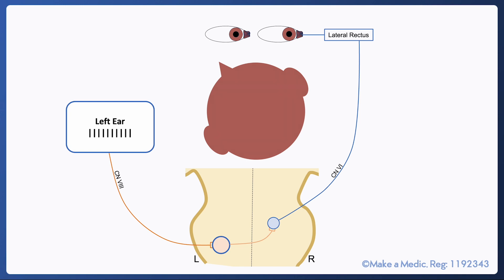To ensure that the ipsilateral eye adducts appropriately an interneuron will travel from the contralateral abducens nucleus to the ipsilateral oculomotor nucleus via the ascending MLF. The oculomotor nerve can trigger contraction of the ipsilateral medial rectus resulting in adduction.